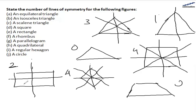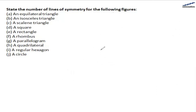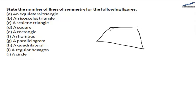For a quadrilateral, we don't have any equal sides and we don't have parallel sides. So, there are zero lines of symmetry.